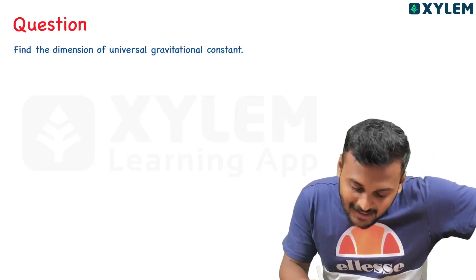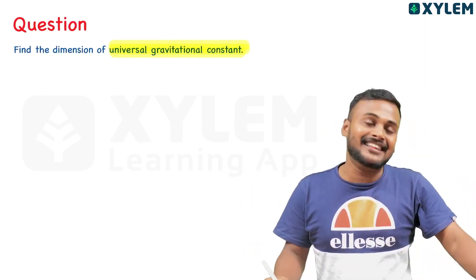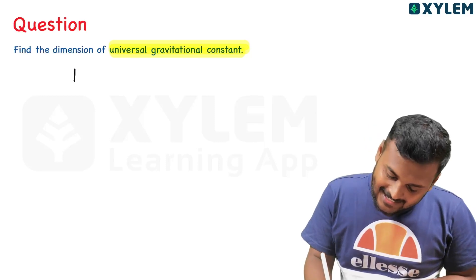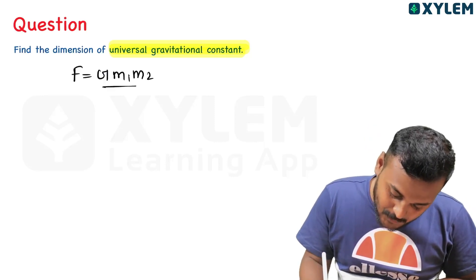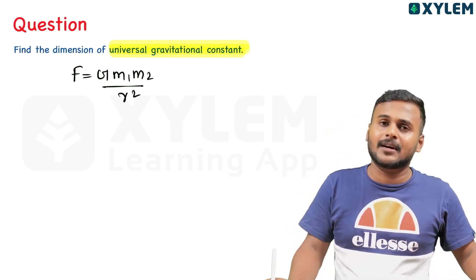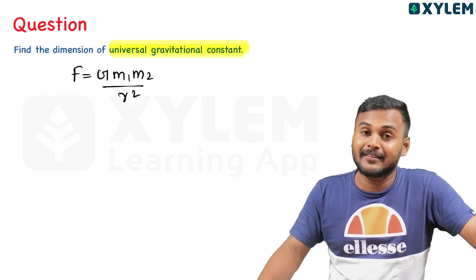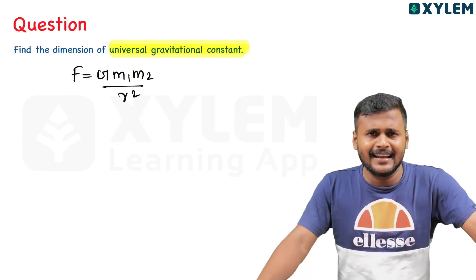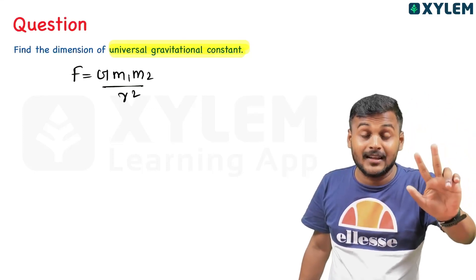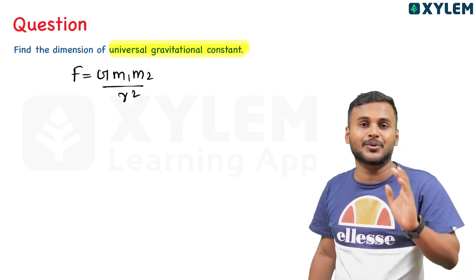Last question: find the dimension of the universal gravitational constant G. We use Newton's law of gravitation: F equals G m₁m₂ divided by r squared. So G equals F r² divided by m₁m₂. Every body attracts every other body with a force directly proportional to the product of their masses and inversely proportional to the square of the distance between them.